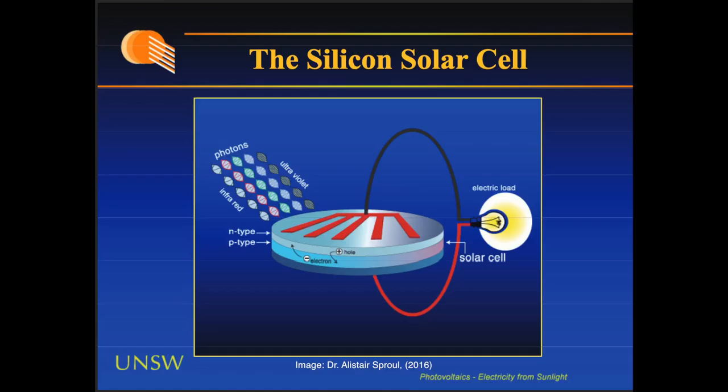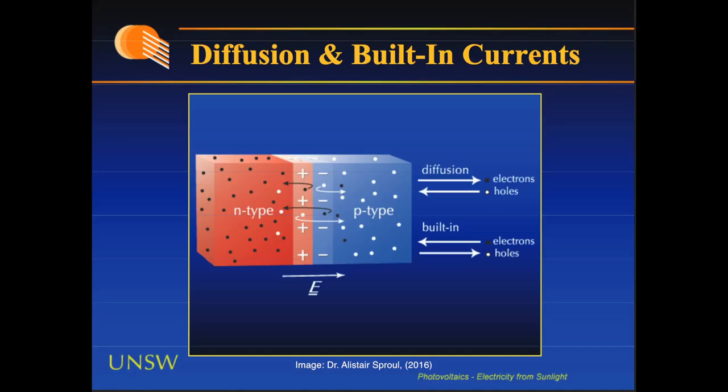Solar cells are essentially large area p-n junctions. When light shines on the cell, electron hole pairs are generated throughout the material. Electron hole pairs will be generated in the solar cell provided that the incident photon has an energy greater than that of the band gap.